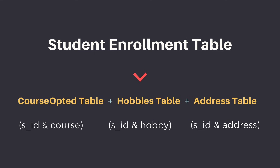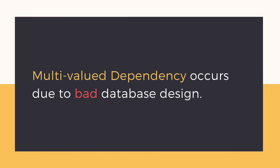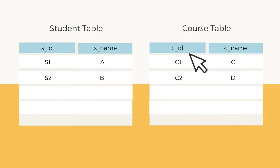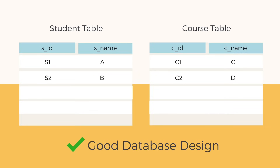So this table will be decomposed into three tables to make this relation satisfy the fourth normal form. Multi-valued dependency occurs due to bad database design. For example, if we have two tables — student with S ID and S name, and course with C ID and C name — keeping both tables separate is a good database design, but what if someone decides to keep all the data together in one table?